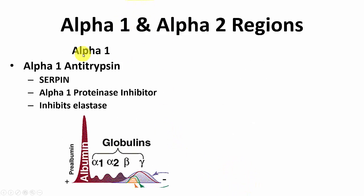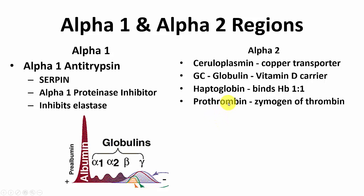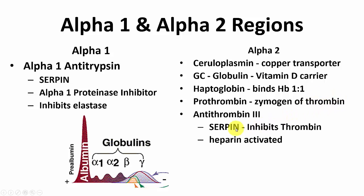In the alpha-1 region we have alpha-1 antitrypsin (A1AT), a serpin — a serine proteinase inhibitor. It is also called alpha-1 proteinase inhibitor, and it inhibits elastase. In the alpha-2 region we have ceruloplasmin (a copper transporter), GC globulin (a vitamin D carrier), haptoglobin (which binds hemoglobin when red blood cells die, preventing its escape into urine), prothrombin (a zymogen of thrombin, important in blood clotting), and antithrombin 3 (another serpin that requires heparin for activation and inhibits thrombin).